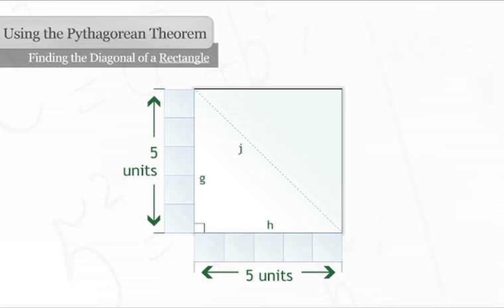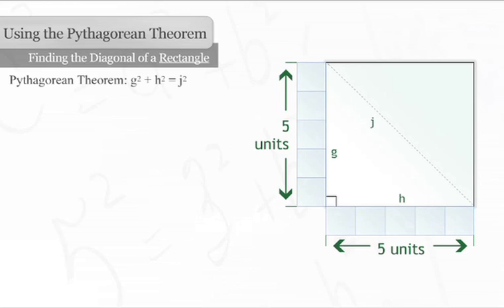Substitute the values for g and h in the theorem. 5 squared plus 5 squared equals j squared. 25 plus 25 equals 50. j squared equals 50.